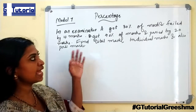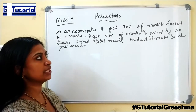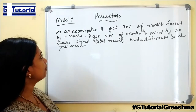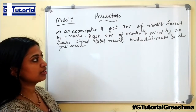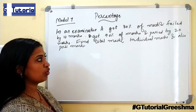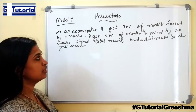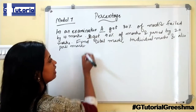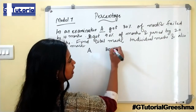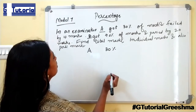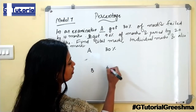This is the 7th model, which is the examination model. In an examination, A got 30% of marks and failed by 10 marks. B got 40% of the marks and passed by 20 marks. Find the total marks, individual marks, and also pass marks. Here there are two students A and B.